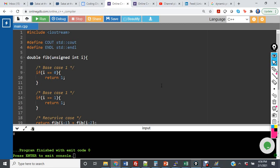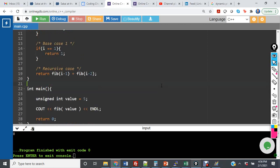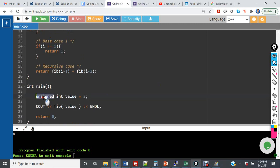So first what I would like to do is show you the main function. Down in main, I've created an unsigned integer value of 5, and then I do cout and endl, and I call a function fib that passes value, and it will print out the result.